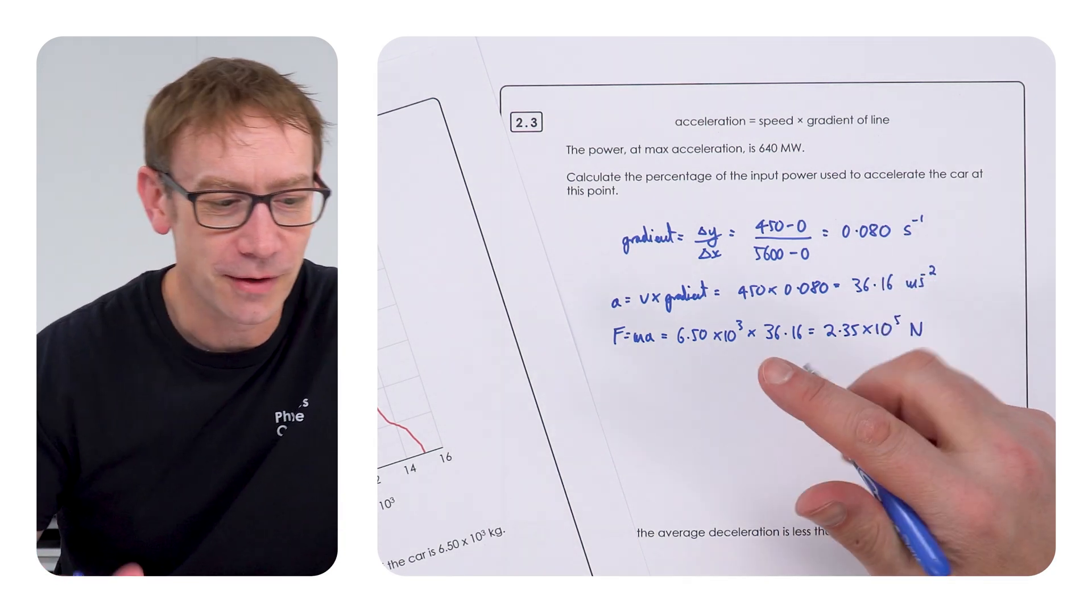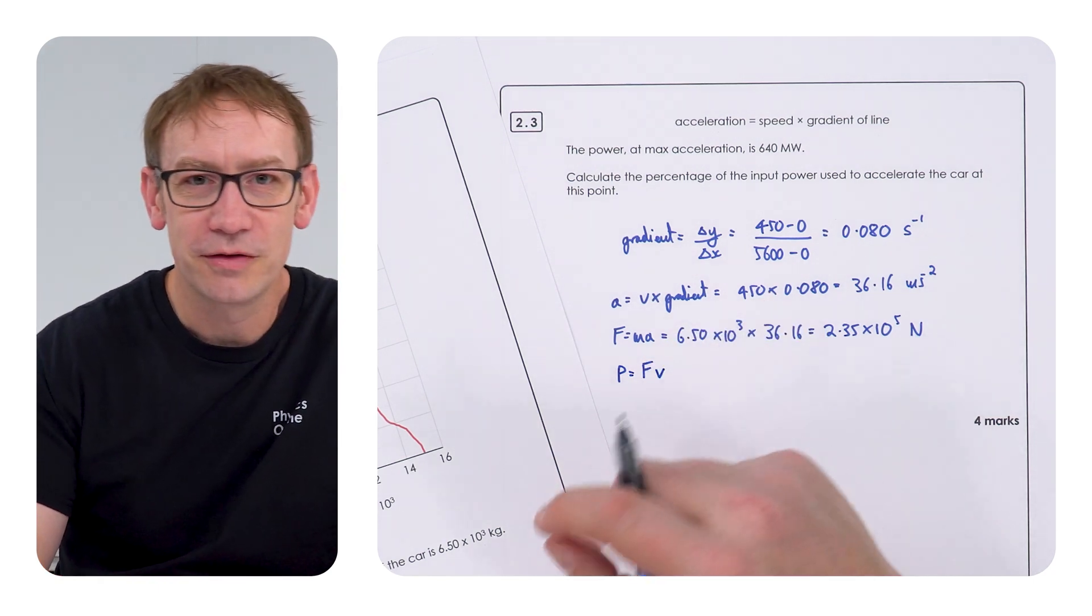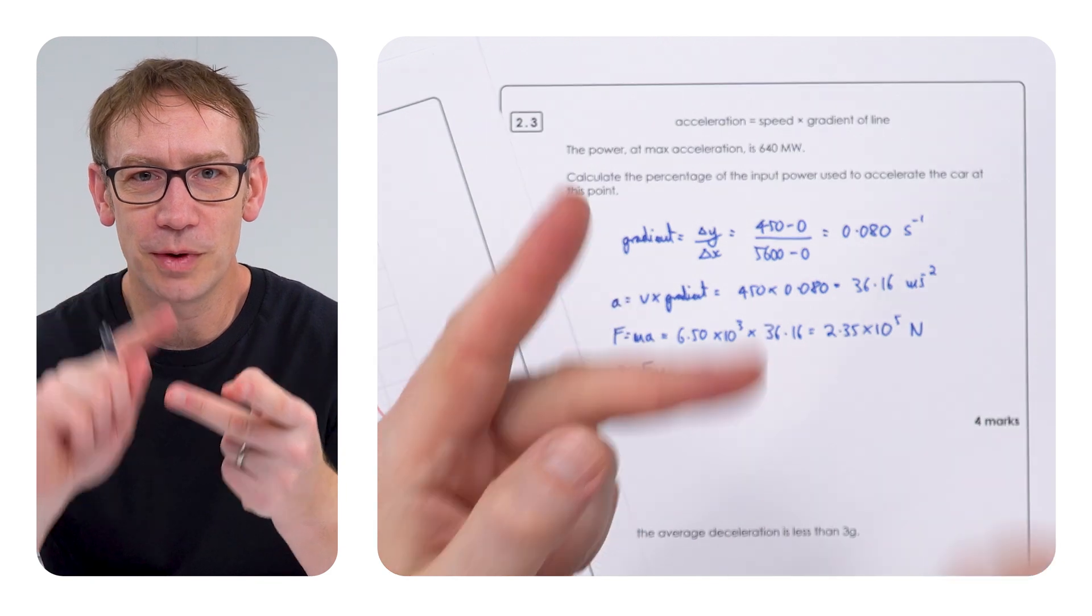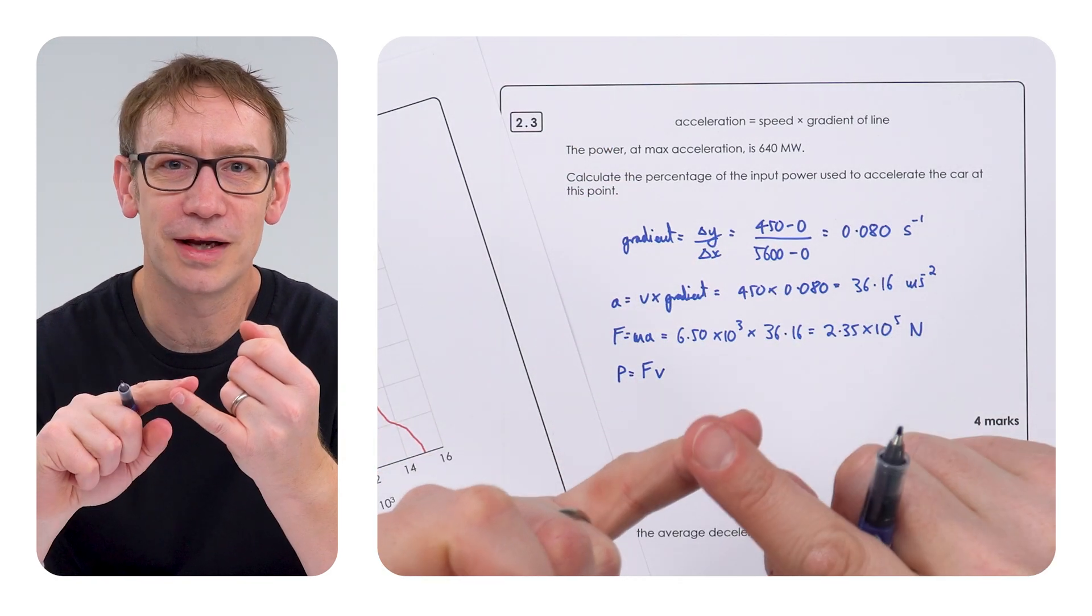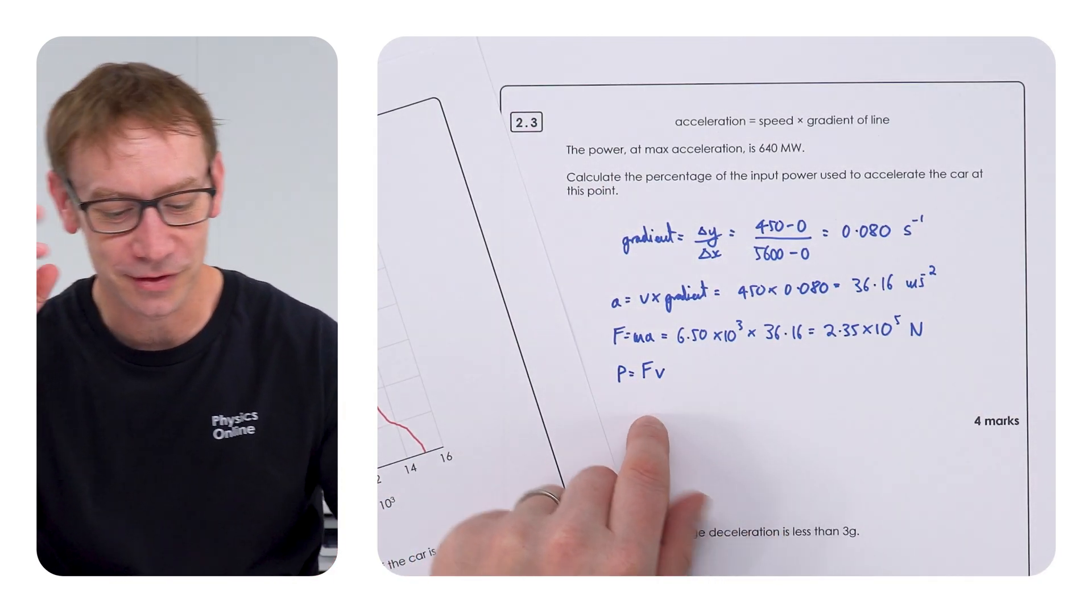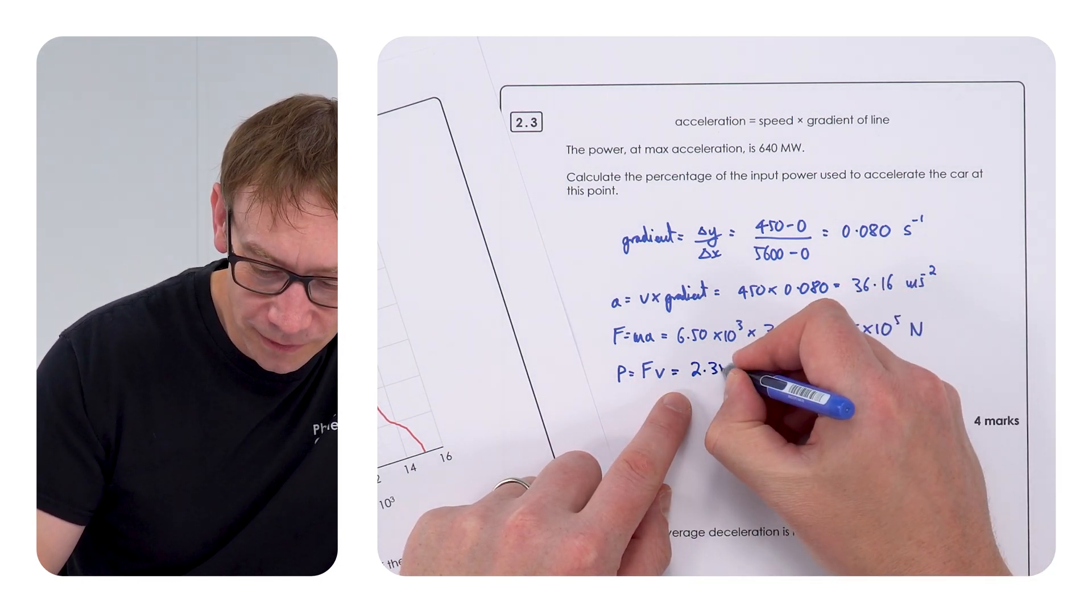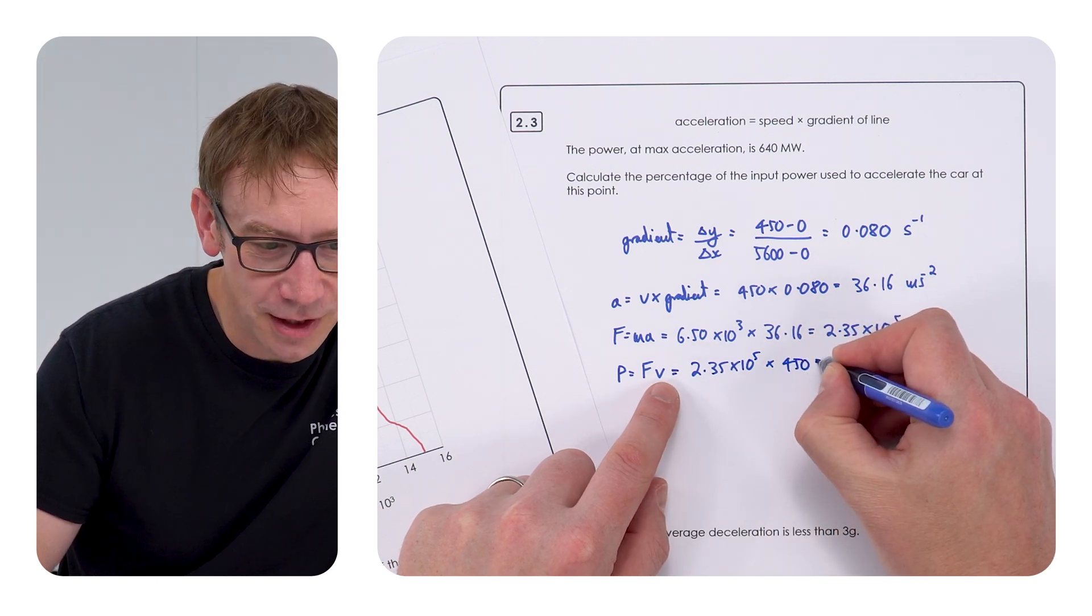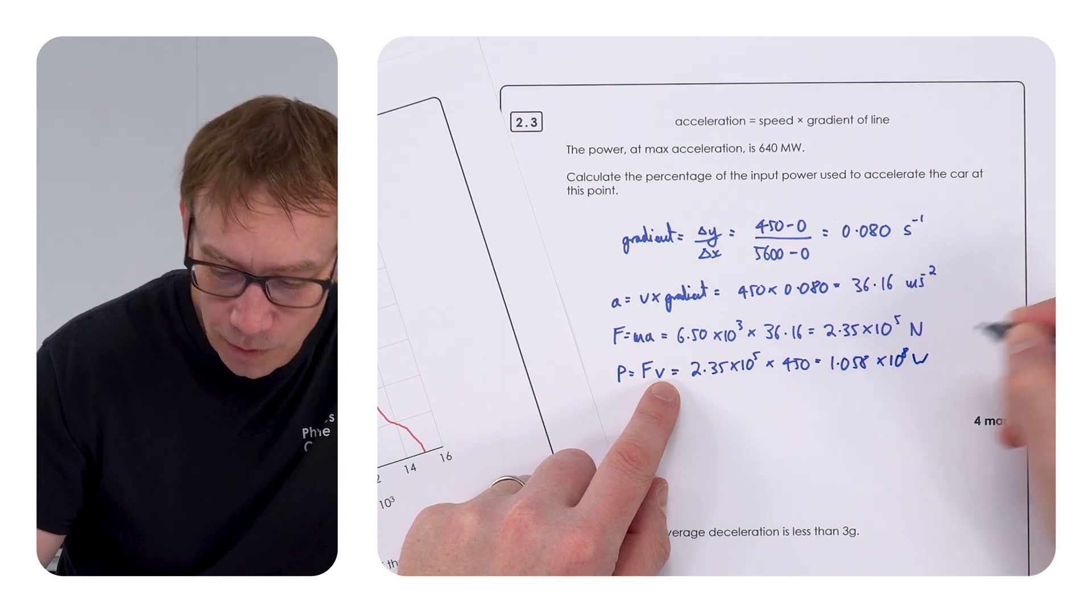And therefore, we can use that to work out the power. And this is the equation for power that doesn't come up that often. The power is equal to the force times velocity. Now, of course, power is energy divided by time. Power is work done divided by time. Power is equal to I squared R. There's all of these electrical powers, but basically this is the other power equation, which doesn't come up that much. So, if we want to work out the power, that's going to be the force, 2.35 times 10 to the 5, times the speed, 450, which equals 1.058 times 10 to the 8 watts.